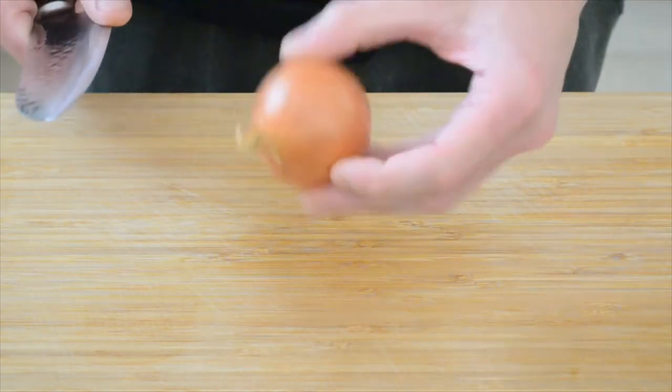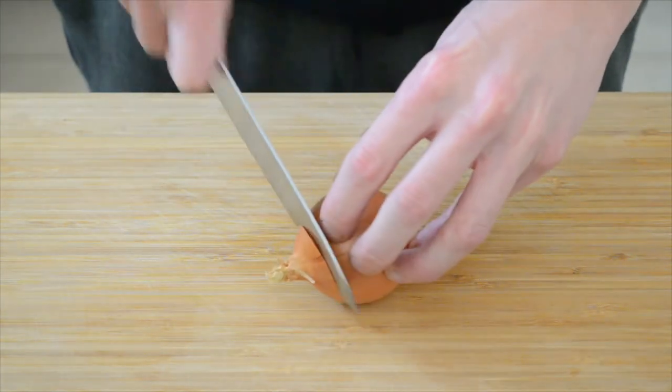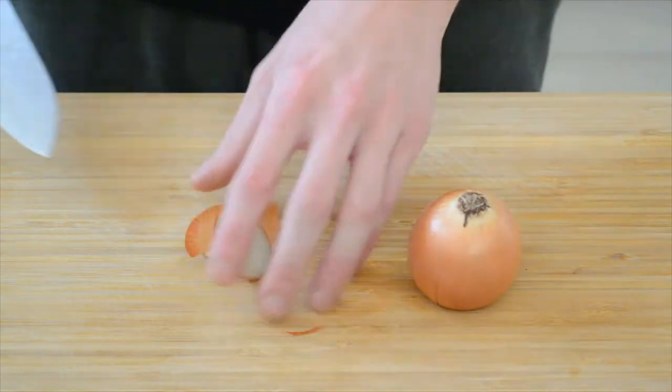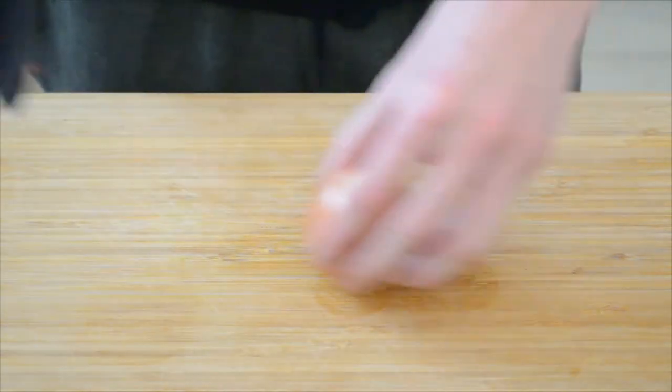The first thing you want to do with the onion is take off this end, leaving the root intact. This holds the onion together when you're slicing it.